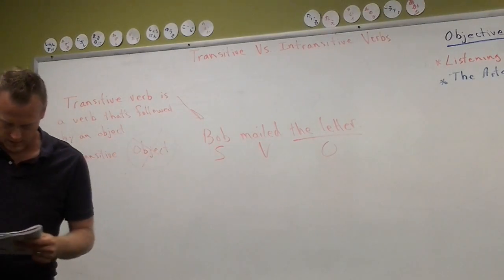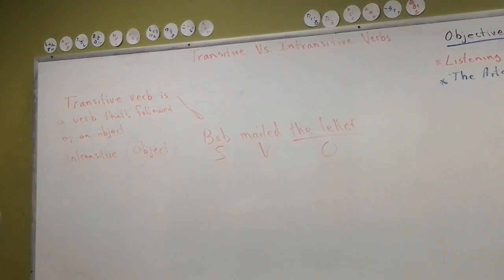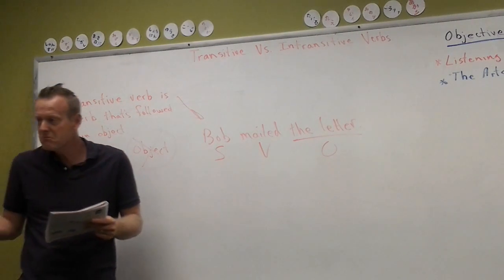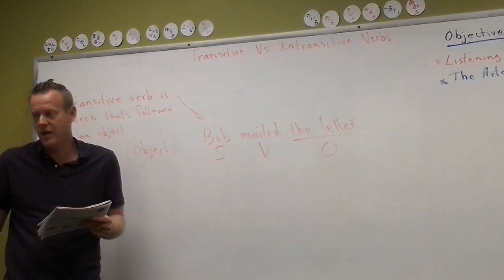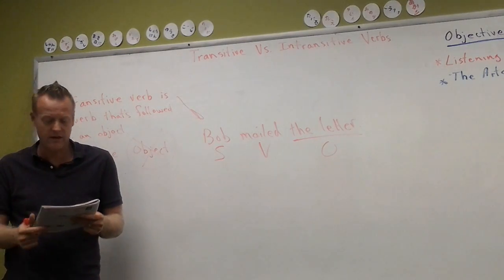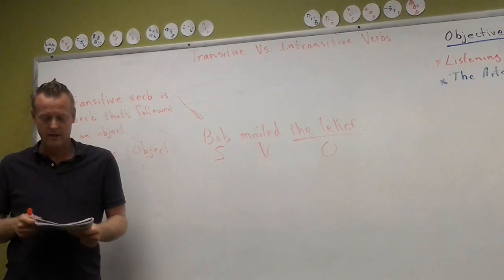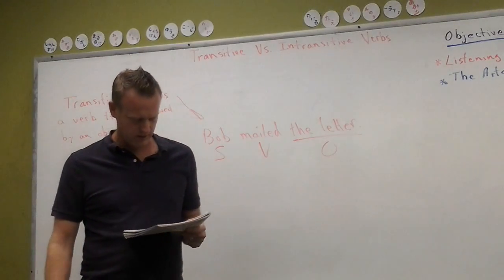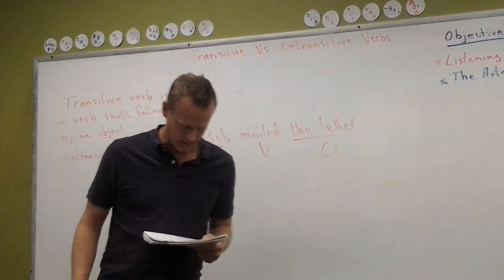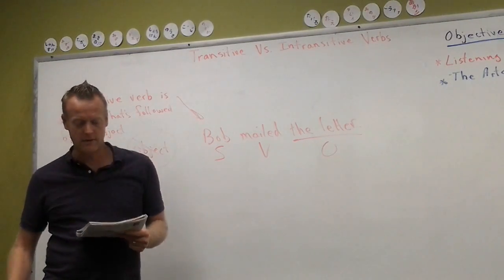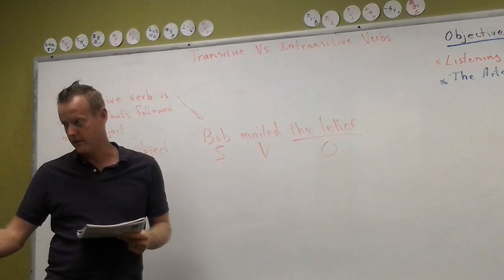Read B: 'Mr. Lee signed the check.' Transitive or intransitive? Transitive. It has an object. Read C: 'I can't kill the bear.' It's transitive. It has an object.